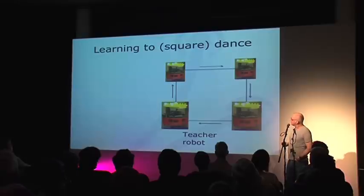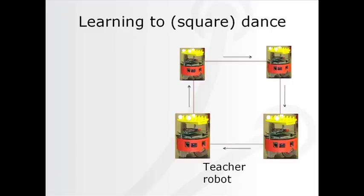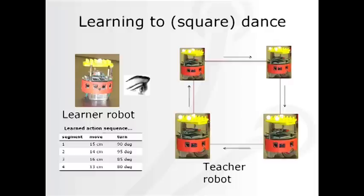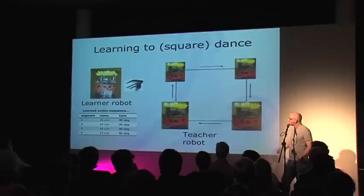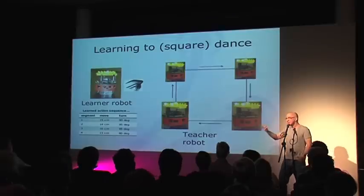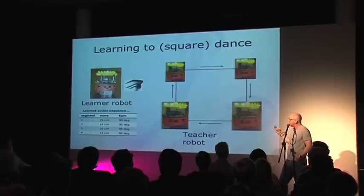Let me show you how. Here is a teacher robot doing a square dance. It takes four straight-line movements and four corner movements to make a square dance. While it's doing that, a learner robot is watching. The learner robot sees the red blob — the red skirt — sometimes getting smaller, sometimes larger, sometimes moving left, sometimes right. The learner robot has to figure out what that movement sequence is.